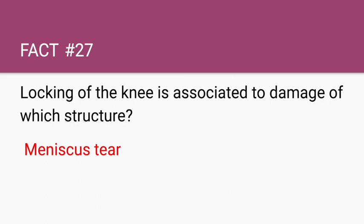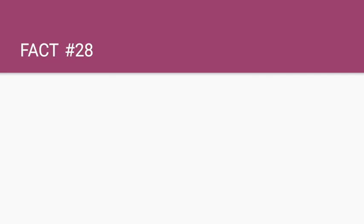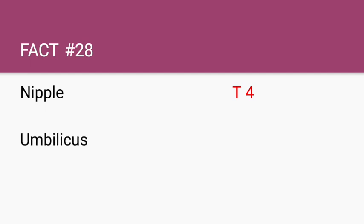Now let's do a quick review of nerve root levels associated with different anatomical landmarks. The nipple is related to T4. The umbilicus is T10. The suprapubic region is L1.